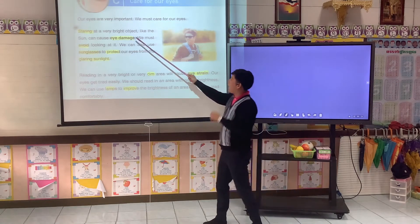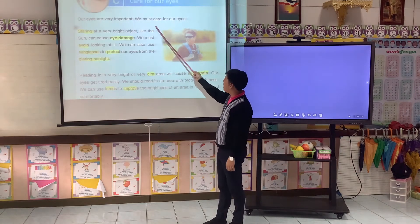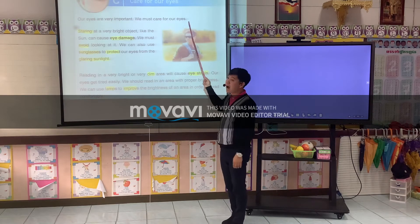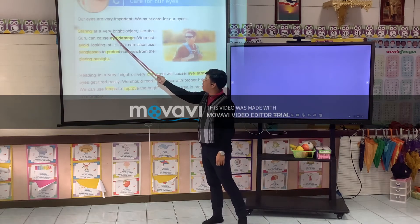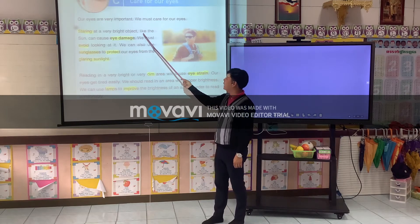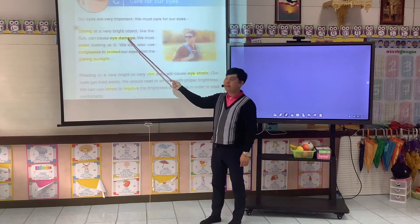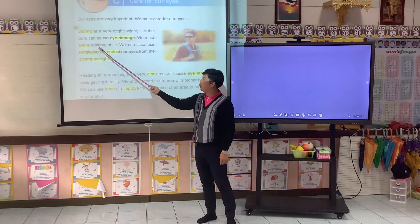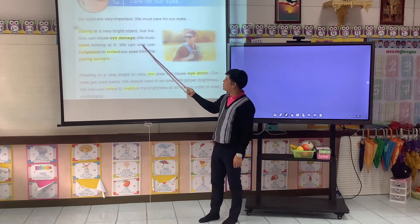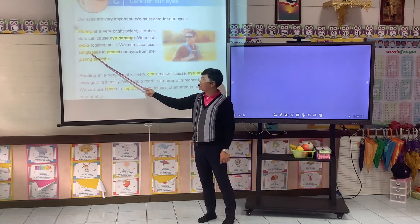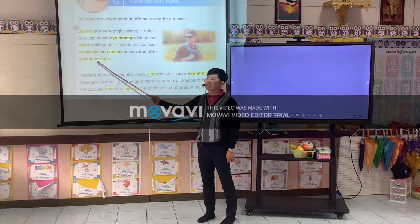Our eyes are very important. We must care for our eyes. Staring at a very bright object, like the sun, can cause eye damage — we must avoid looking at it. We can also use sunglasses to protect our eyes from the glaring sunlight.